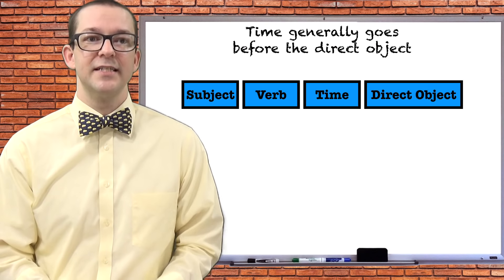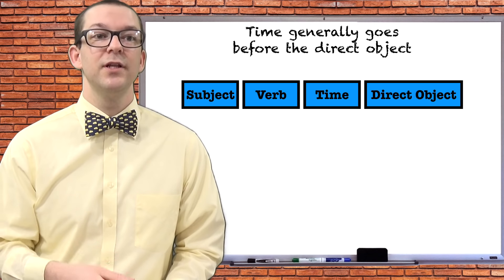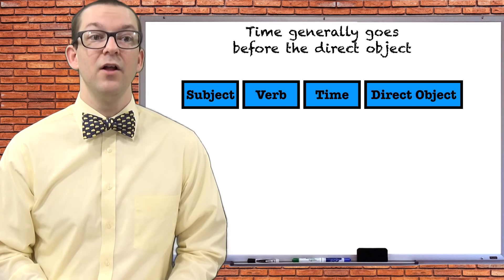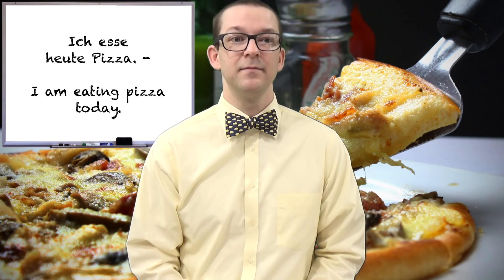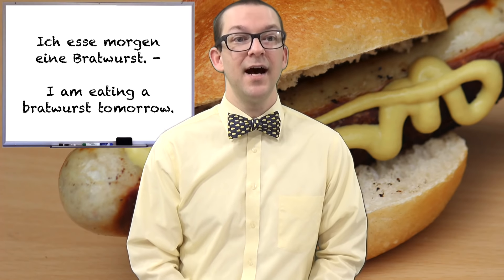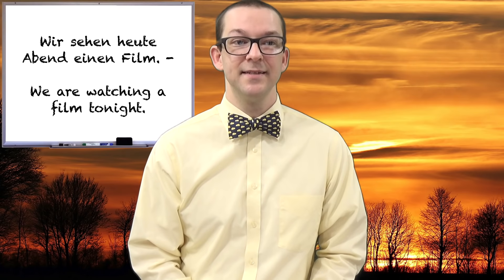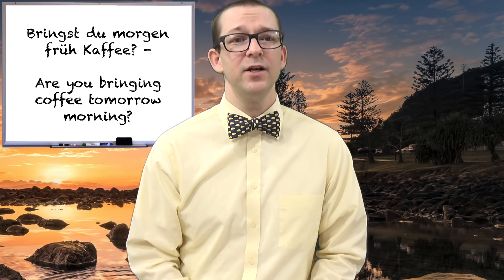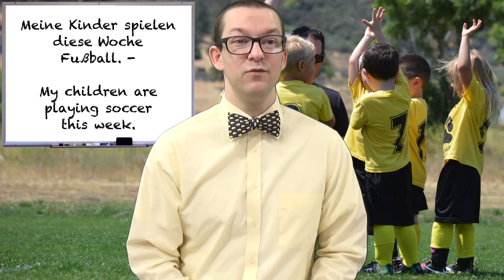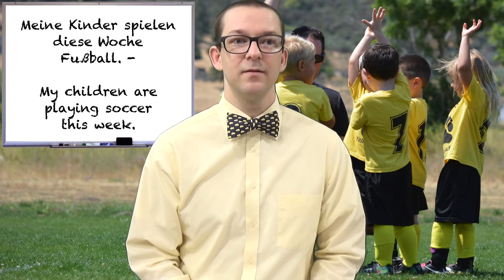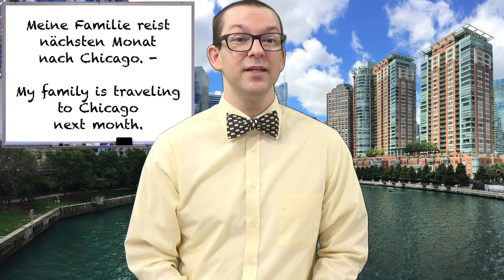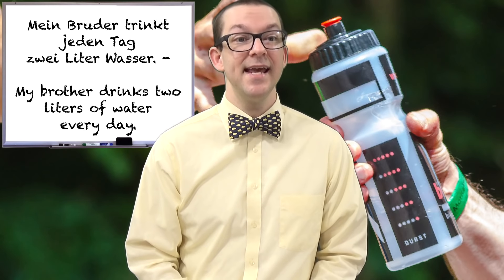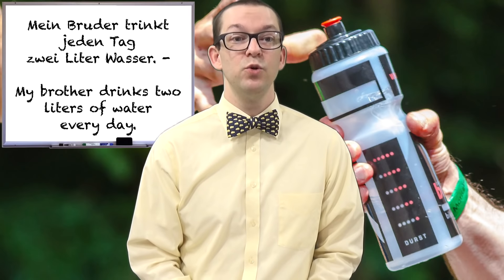If you didn't pick up on it in the previous sentences, when you use the time element behind the verb, it usually precedes the direct object. To show you more of these examples, I'll introduce you to some other time words that I haven't used yet. Ich esse heute Pizza. I am eating pizza today. Ich esse morgen eine Bratwurst. I am eating a Bratwurst tomorrow. Wir sehen heute Abend einen Film. We are watching a film tonight. Bringst du morgen früh Kaffee? Are you bringing coffee tomorrow? Meine Kinder spielen diese Woche Fußball. My children are playing soccer this week. Meine Familie reist nächsten Monat nach Chicago. My family is traveling to Chicago next month. Mein Bruder trinkt jeden Tag zwei Liter Wasser. My brother drinks two liters of water every day.